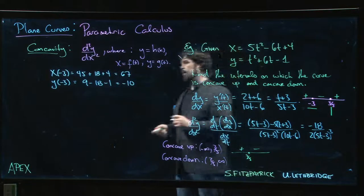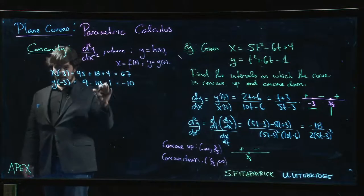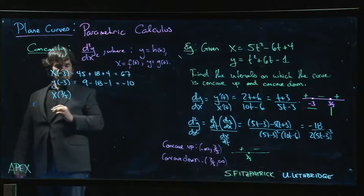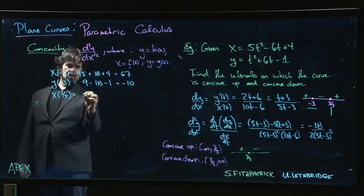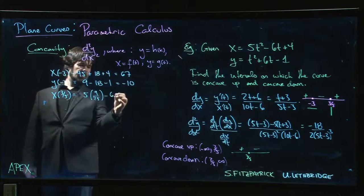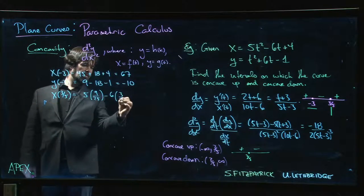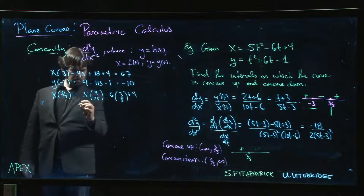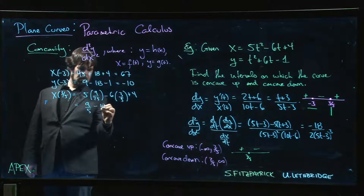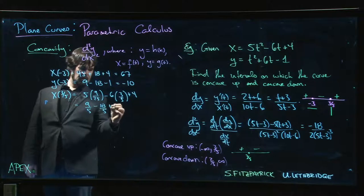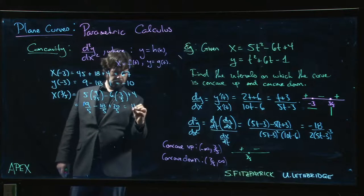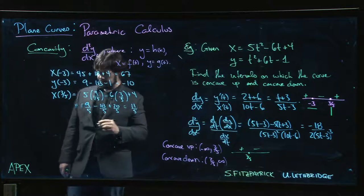We can do that. It's going to be hard to fit that on the graph, but it's there. x at t = 3/5, I get 5 times 9/25 - 6 times 3/5 + 4. So that is 9/5 - 18/5. 4 is 20/5, so that's going to give me 11/5, slightly less than 2.